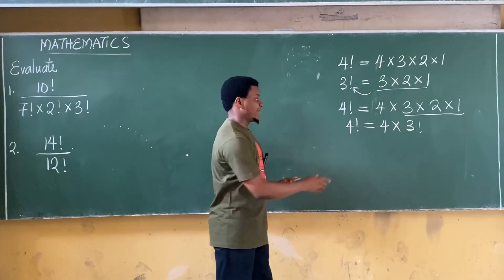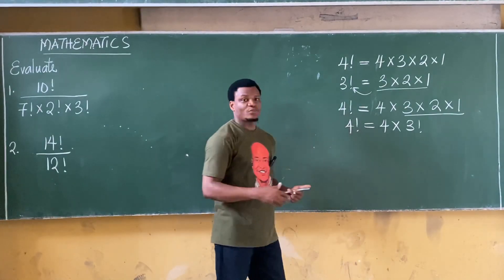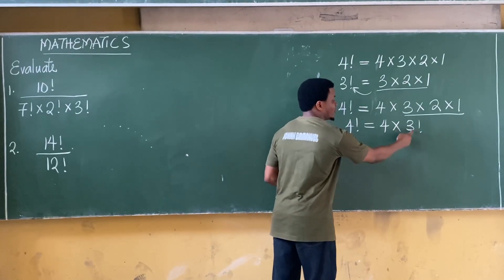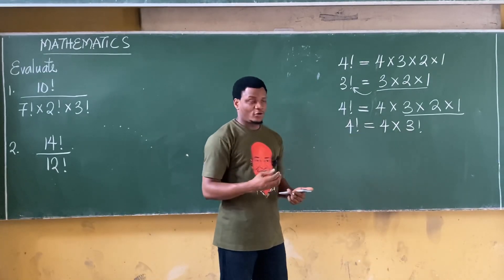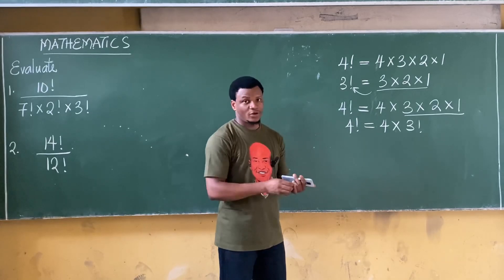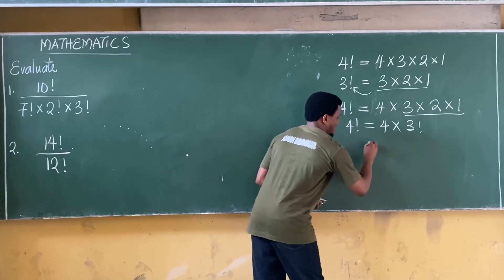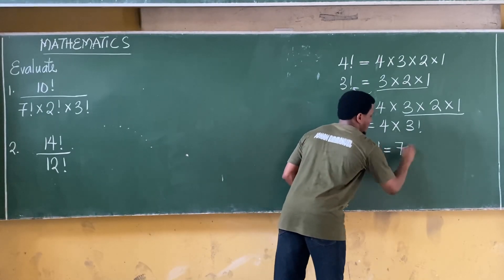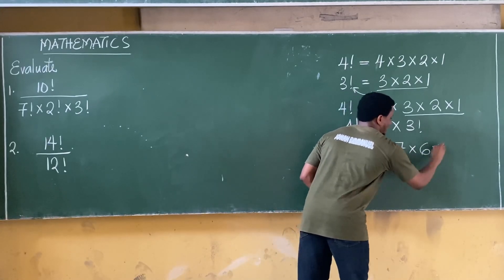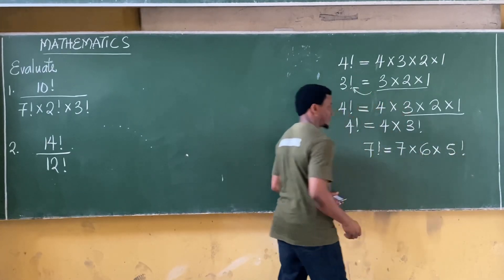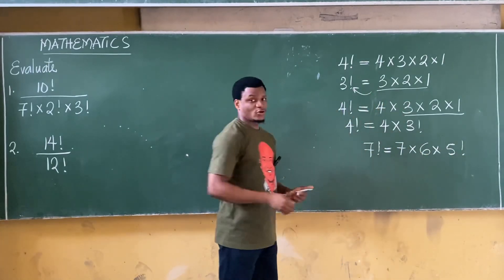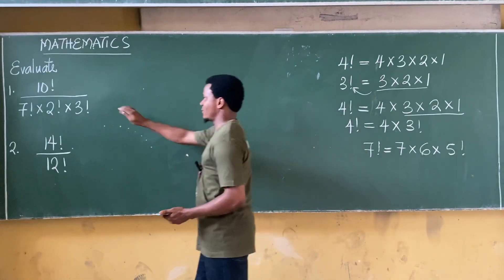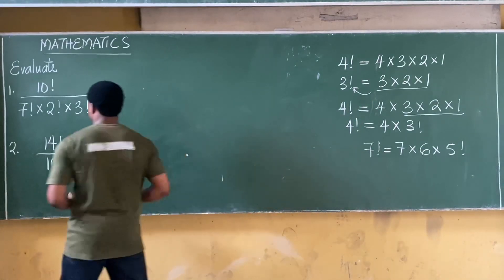This tells you that a particular factorial can also be expressed as the multiple of another factorial of a lower figure. In essence, we can say that seven factorial is equal to seven times six times perhaps five factorial — this is also correct. Let's use this concept to solve the next question.